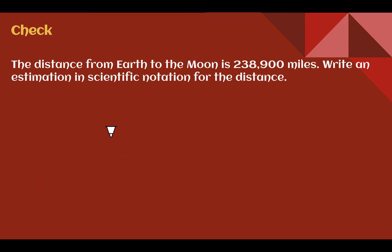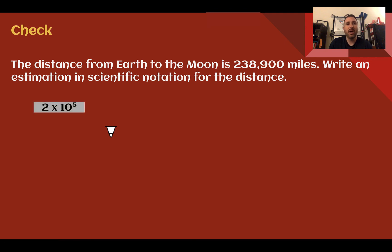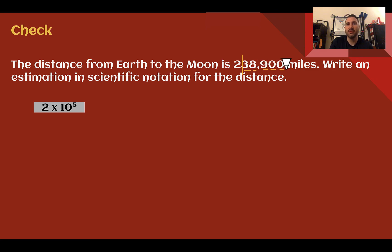Check your understanding: read through the situation and write an estimation in scientific notation. Pause the video and complete the check. You should have said about 2 times 10 to the 5th. Taking the value and rounding so I just have one digit in my factor — I'd have 2, as the 3 rounds it down. Then there are 5 places to the decimal at the end, so 2 times 10 to the 5th.